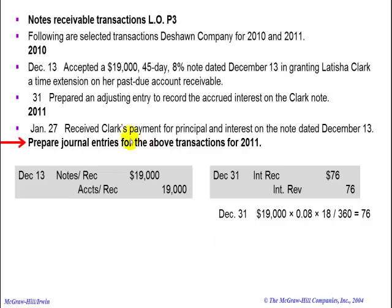Now, on January 27th of the next year, we received Clark's payment for principal and interest on the note dated December 13th. With 45 days having gone by, we're going to debit cash for $19,190.